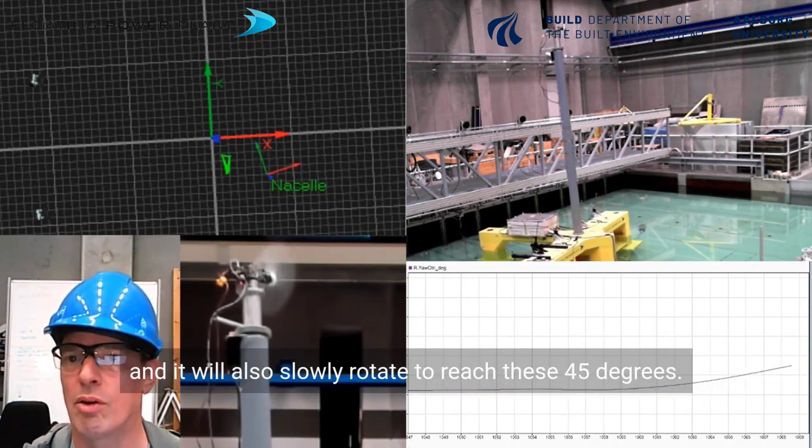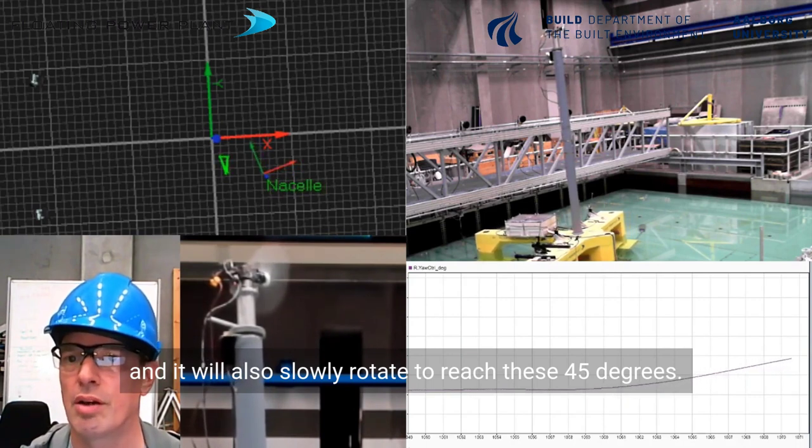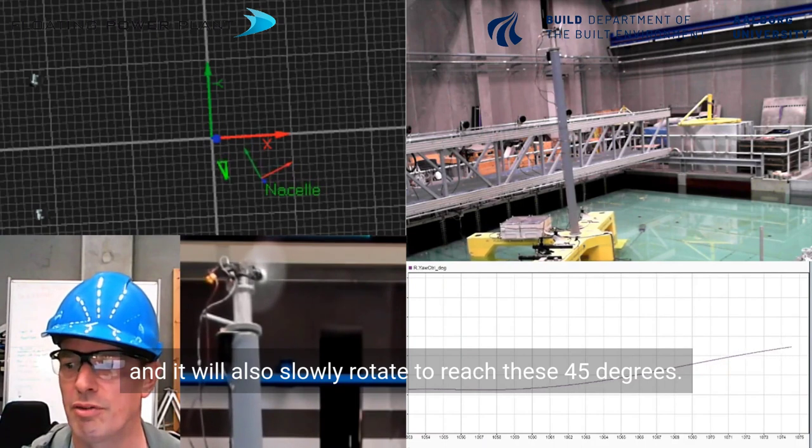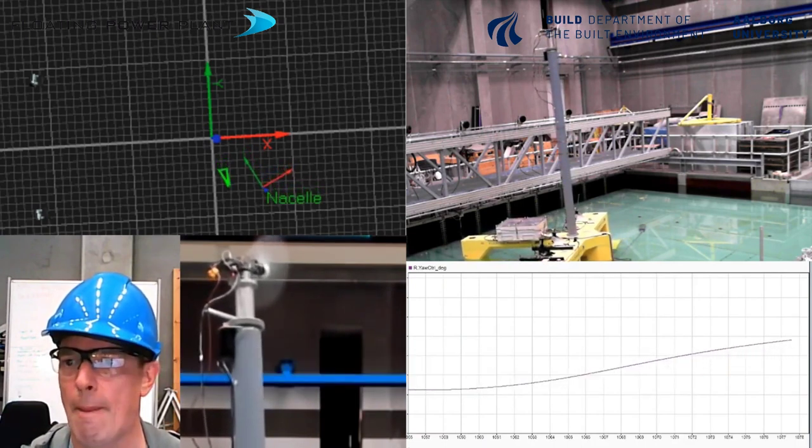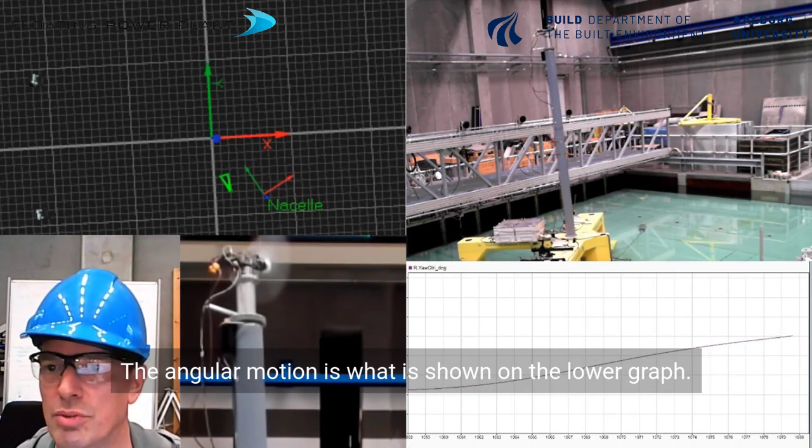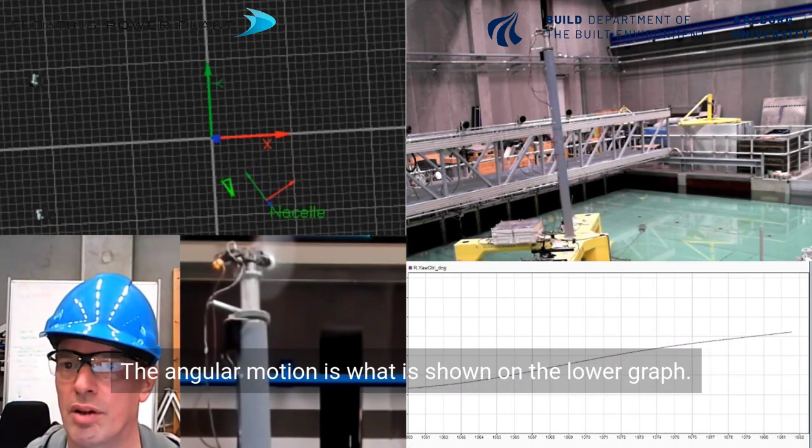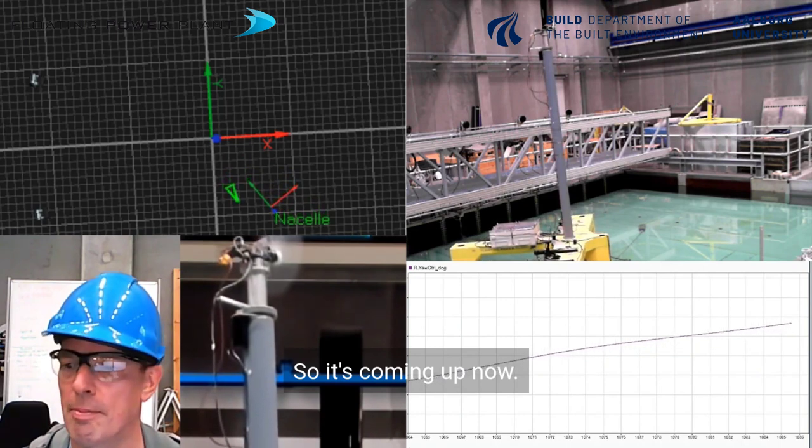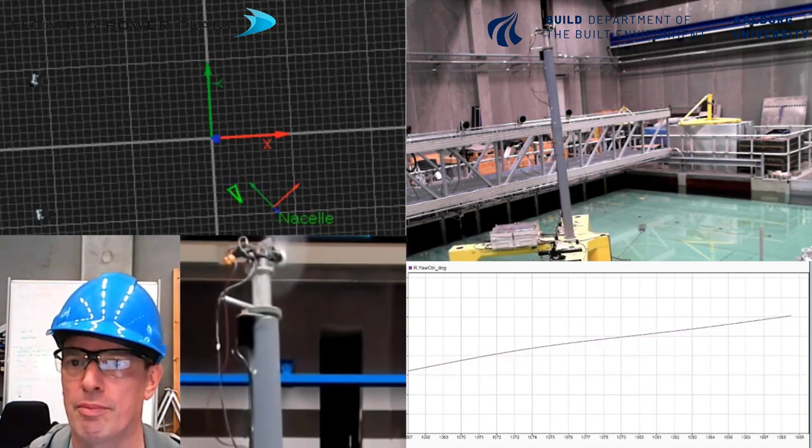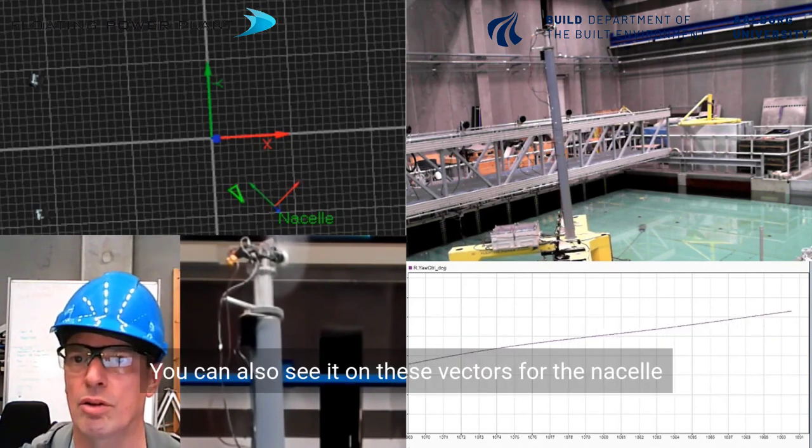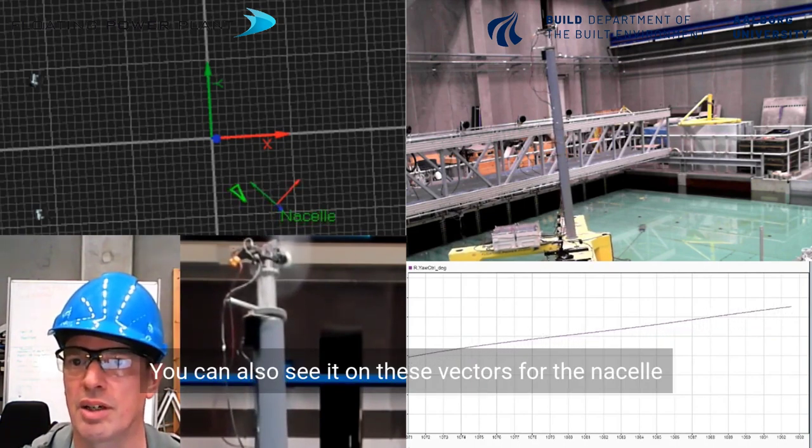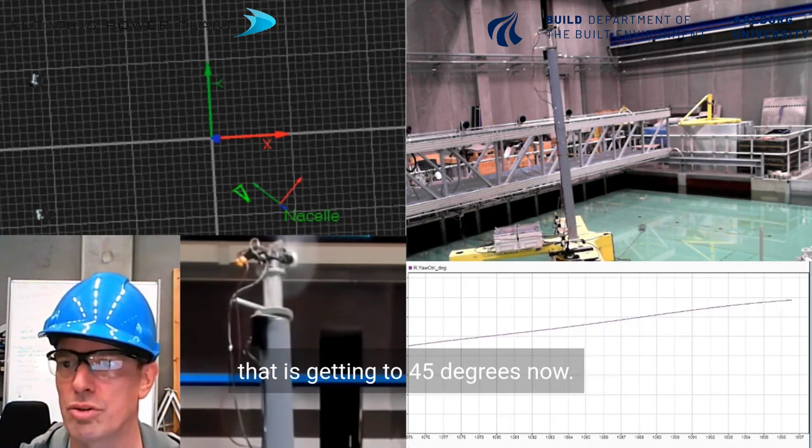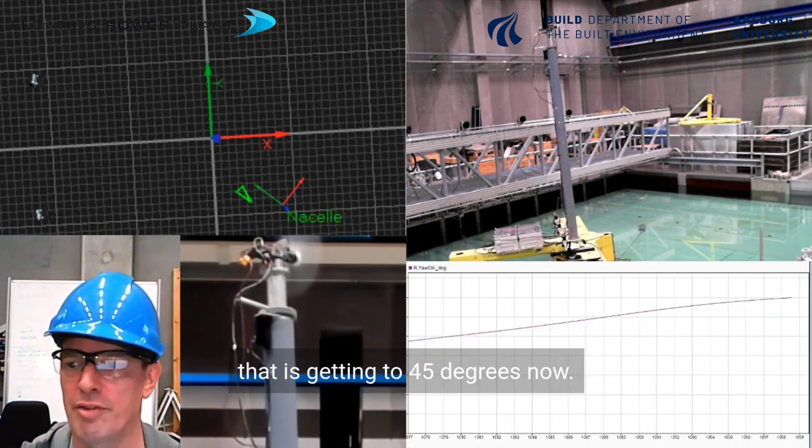And it will also slowly rotate to reach these 45 degrees. The angular motion is what is shown on the lower graph. It's coming up now. You can also see it on these vectors for the nacelle. It's getting to 45 degrees now.